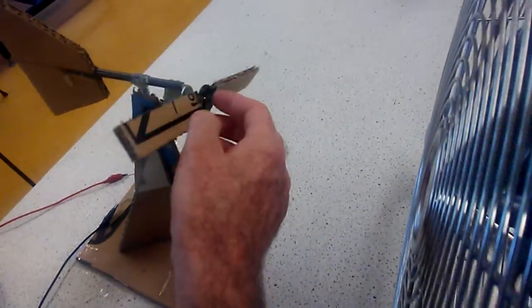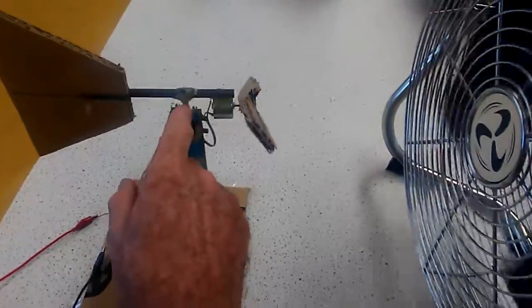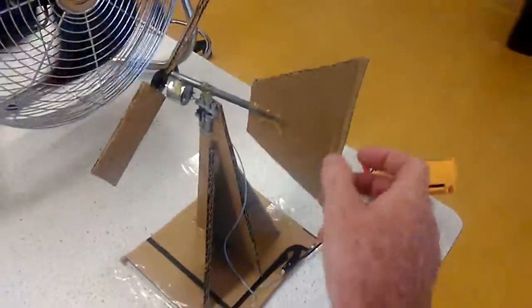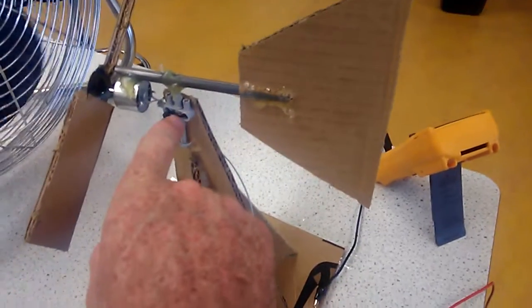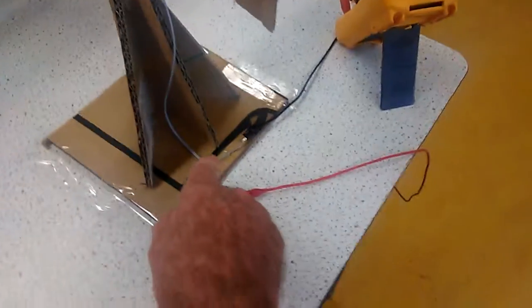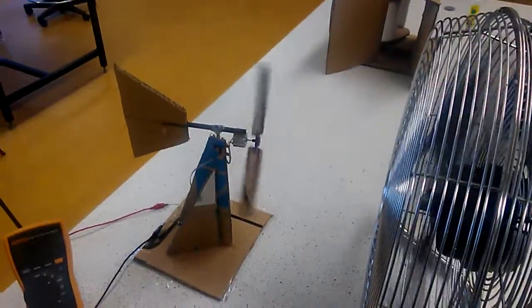Nothing fancy - pen case, piece of Lego. This is to keep it facing the wind. Here's the Lego mount here, cable tied on, cable going down to here, and just a bit of stability on the cardboard here.